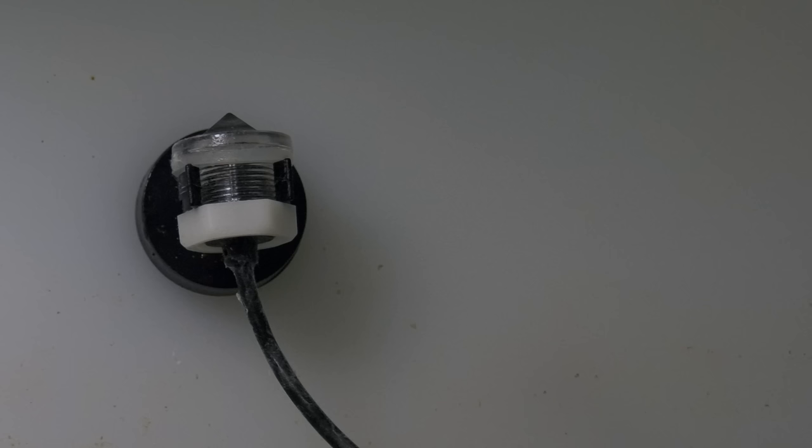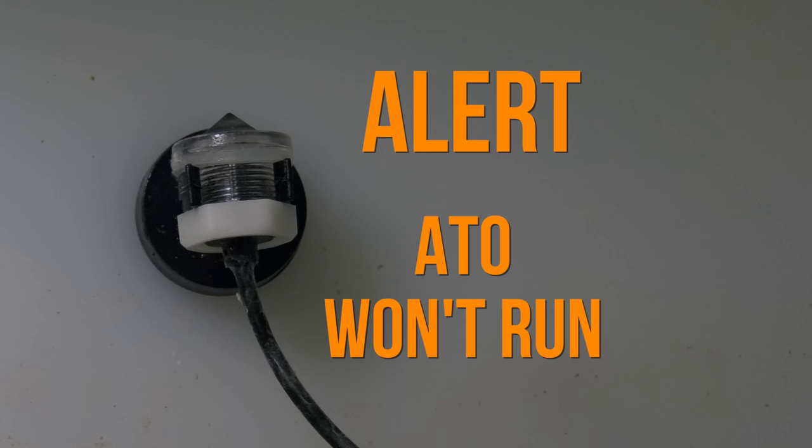Revisiting the low water sensor in the RODI vat, if this sensor goes dry, then the owner gets an alert and the ATO pump won't run until the sensor is wet again. This prevents the ATO pump running dry and burning out.